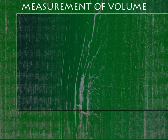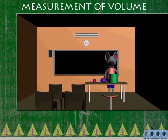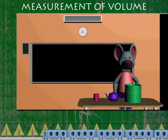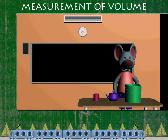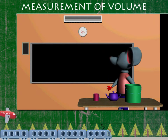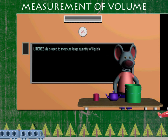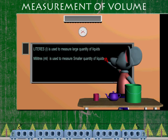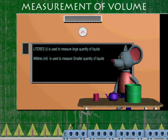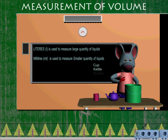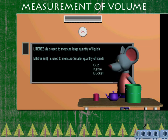Robby has a cup, a kettle, and a bucket on the table. Robby says: litre is used to measure large quantity of liquids, and millilitre is used to measure smaller quantity of liquids.